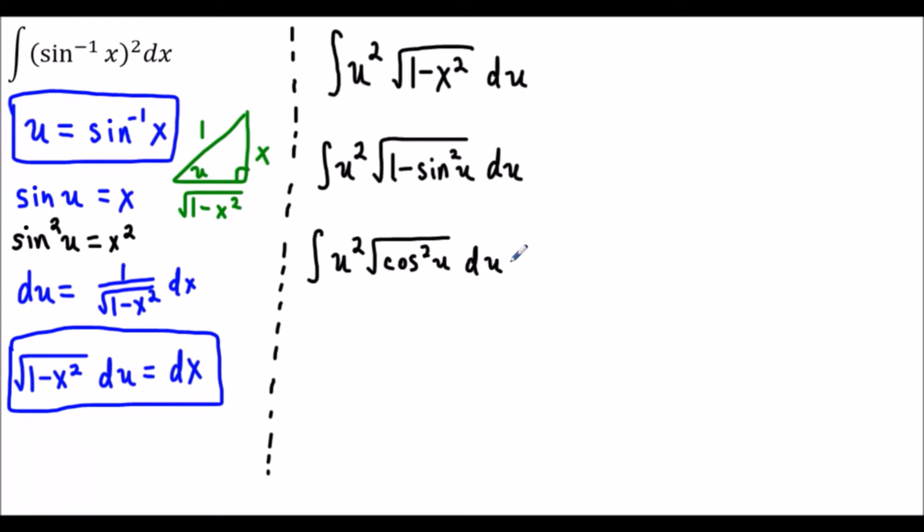For the next phase we're just going to have u squared times cosine u du. The square root of cosine squared is just cosine. This integral here is going to bring us to the next and final stage where we're going to evaluate it using integration by parts.